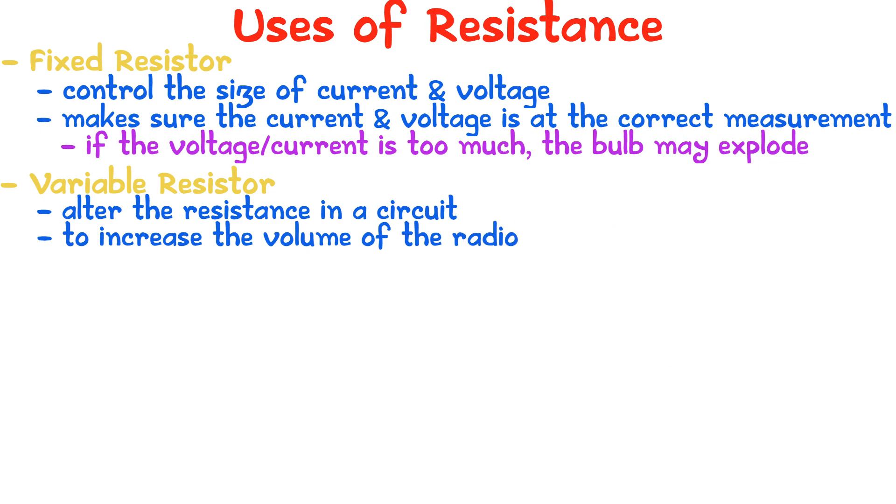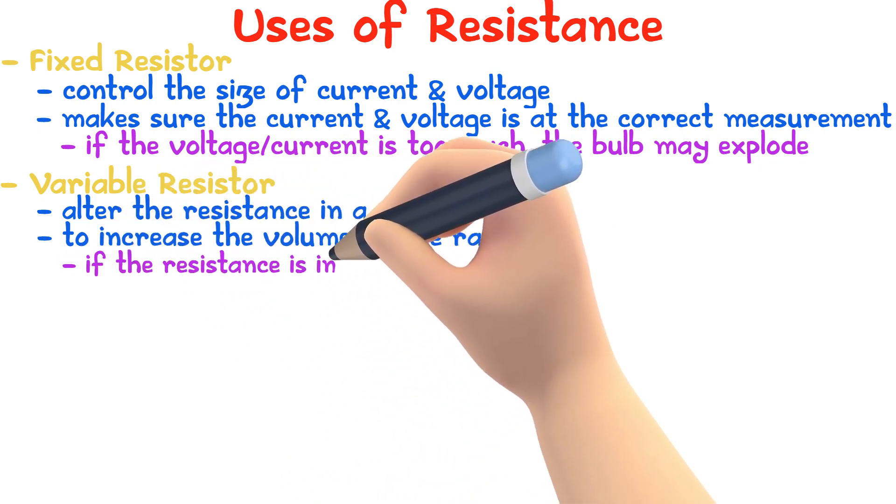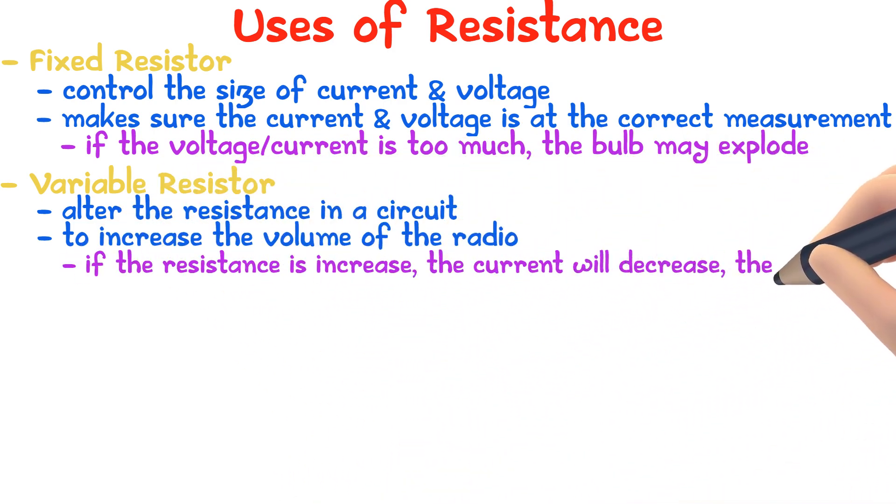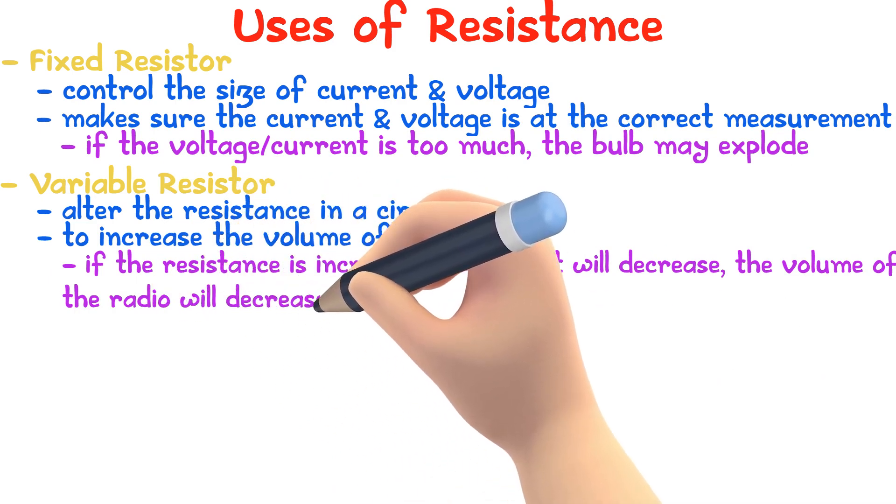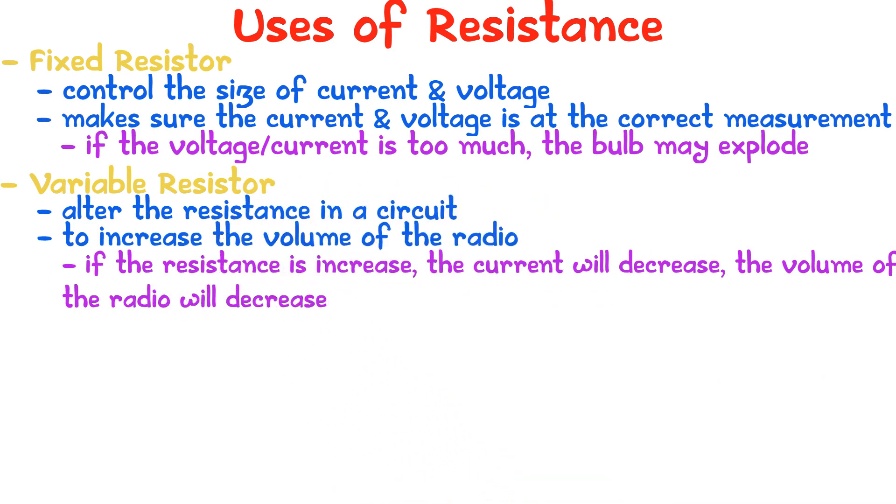If the resistance is increased, the current will be smaller and so a bulb will burn dimmer or not burn at all. But if the resistance is decreased, the current would be larger, so the bulb would be brighter.